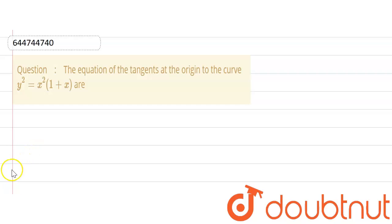Hello friends, welcome to Doubtnut. Our question is: the equation of the tangents at the origin to the curve y square equals to x square 1 plus x are.